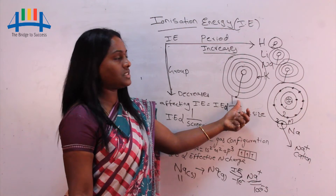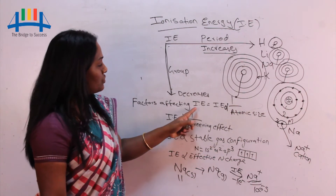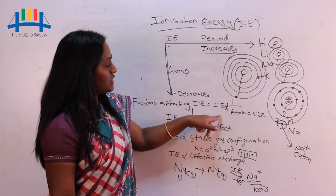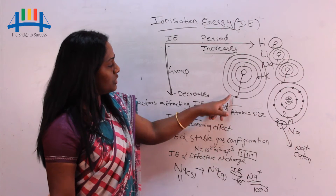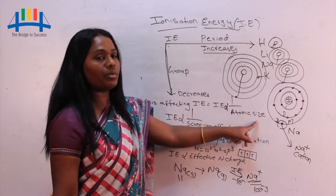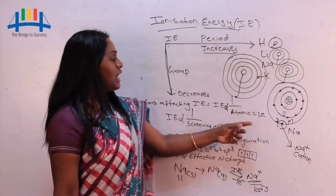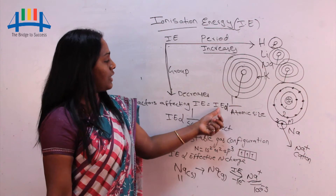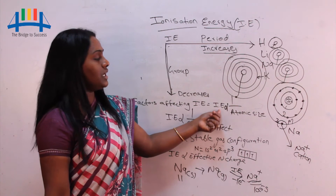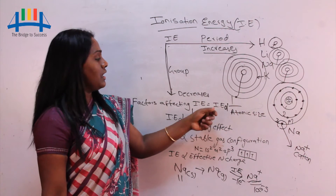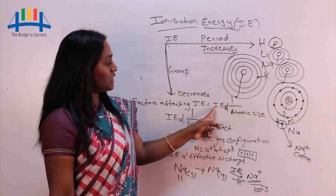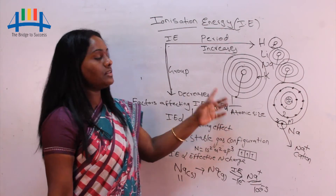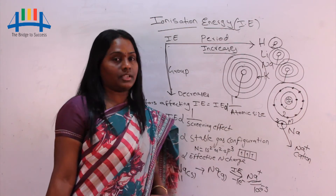That's why going down the group, ionization energy decreases due to the increasing atomic size. Ionization energy is inversely proportional to atomic size: atomic size increases → ionization energy decreases; ionization energy increases → atomic size is decreasing.